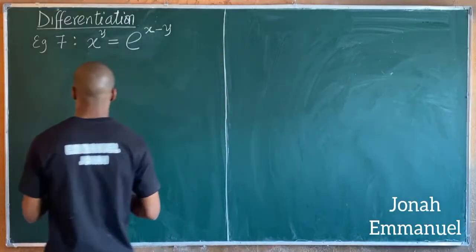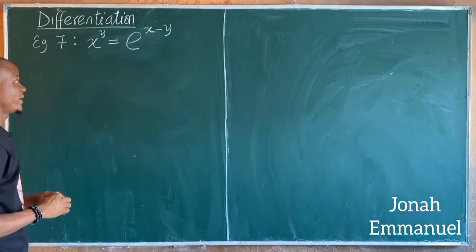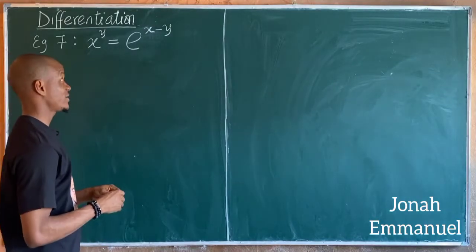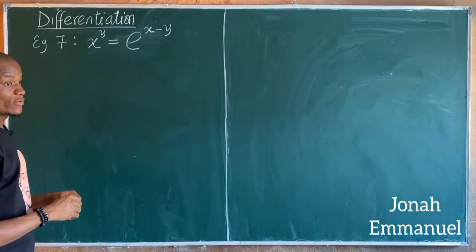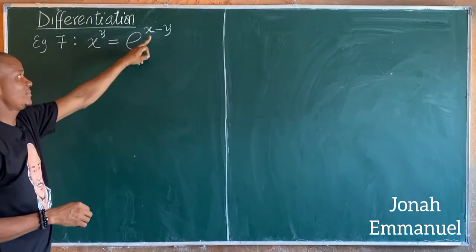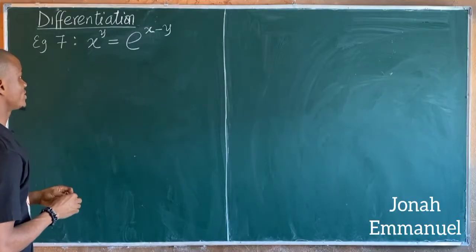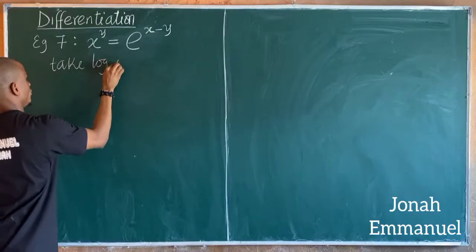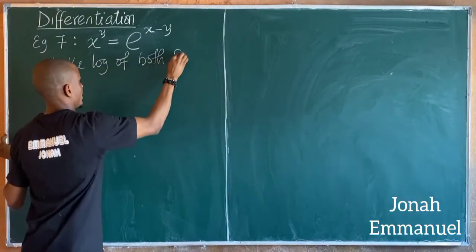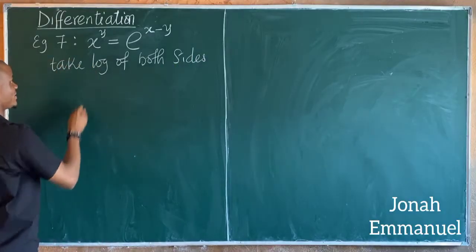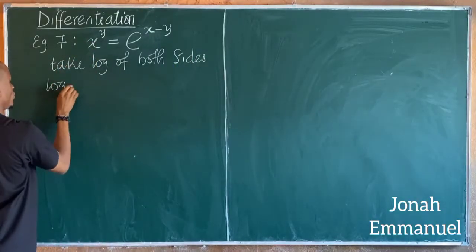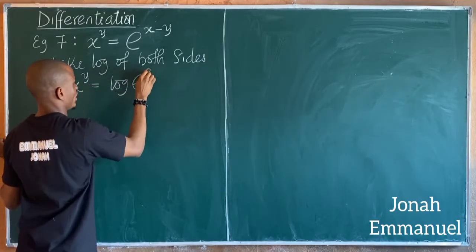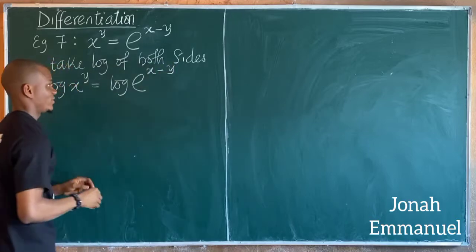For the seventh example, we have x^y equal to e^(x minus y), and we need to find dy/dx. The first step is to take the log of both sides: log of x^y equals log of e^(x minus y).